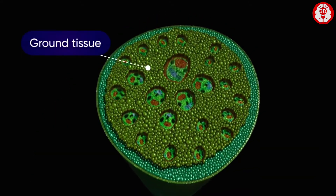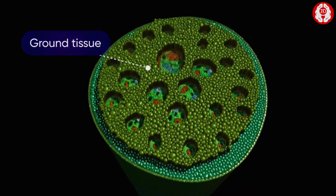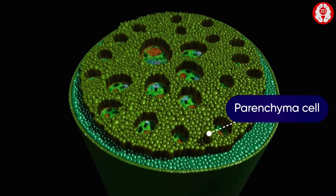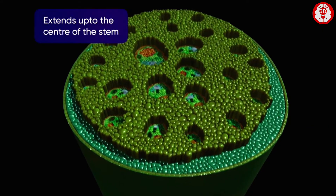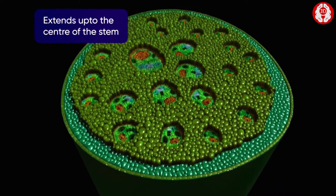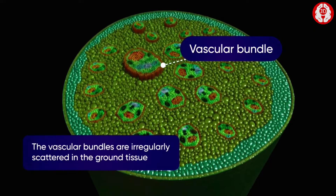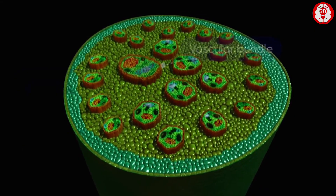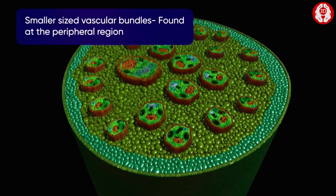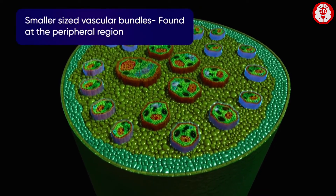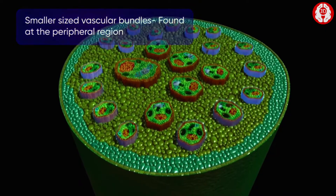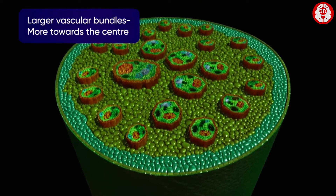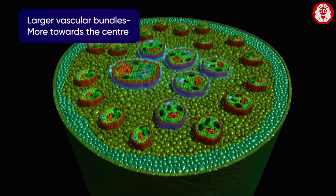Next is the ground tissue layer, made up of thin-walled parenchyma cells which extends up to the center of the stem. The vascular bundles are irregularly scattered in the ground tissue. The smaller sized vascular bundles are more in number and are found at the peripheral region, while the large bundles are less in number and more towards the center.